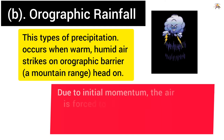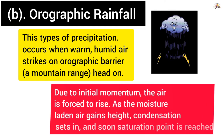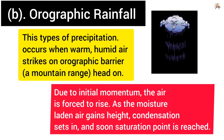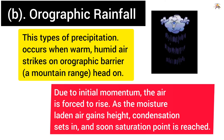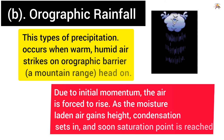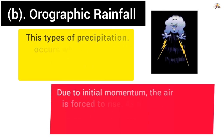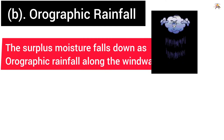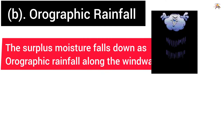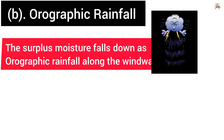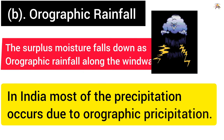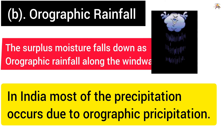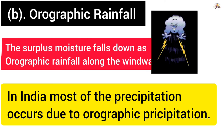Due to initial momentum, the air is forced to rise. As the moisture-laden air gains height, condensation sets in, and soon the saturation point is reached. The surplus moisture falls down as orographic rainfall along the windward slope. In India, most of the precipitation occurs due to orographic precipitation.